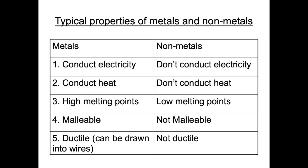Now let's look at typical properties of metals and non-metals. It's important to get the most out of this video that you understand these typical properties, because we're going to explain these properties later using the metallic bonding model. Key properties you should know about metals are that they conduct electricity, they conduct heat, they have high melting points, they are malleable which means we can hammer them into different shapes, and they're ductile which means they can be drawn into wires.